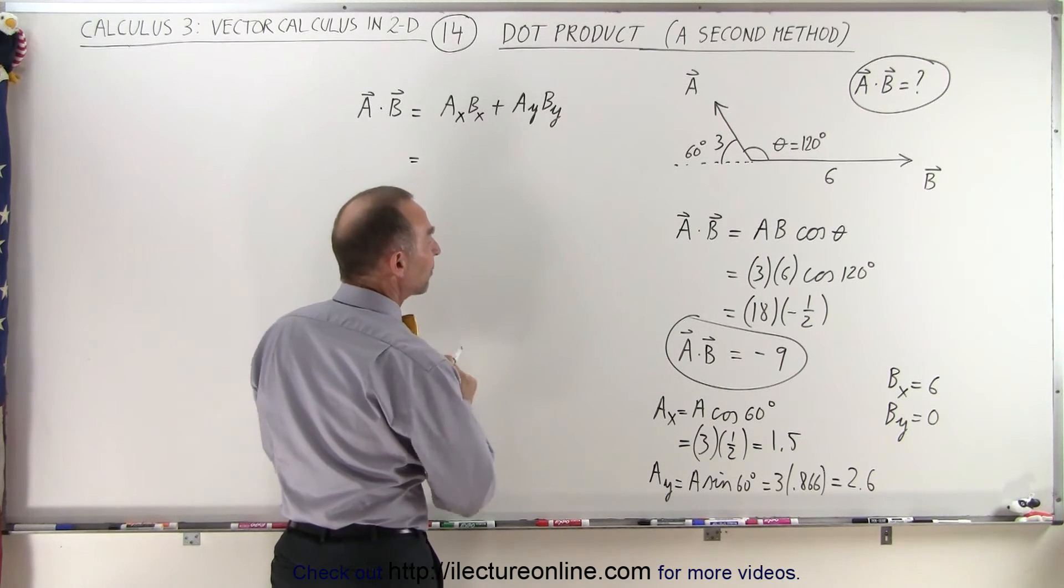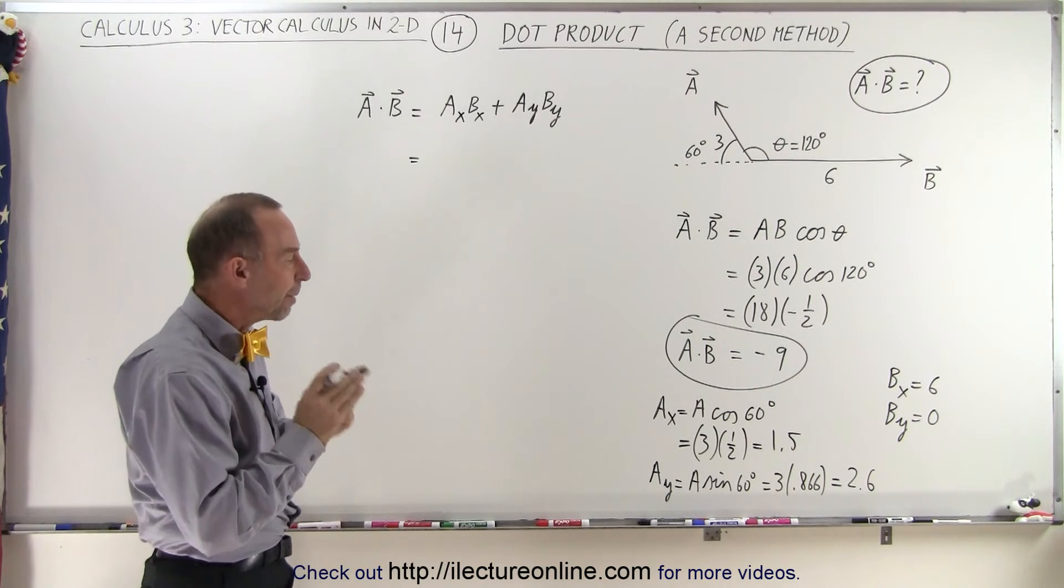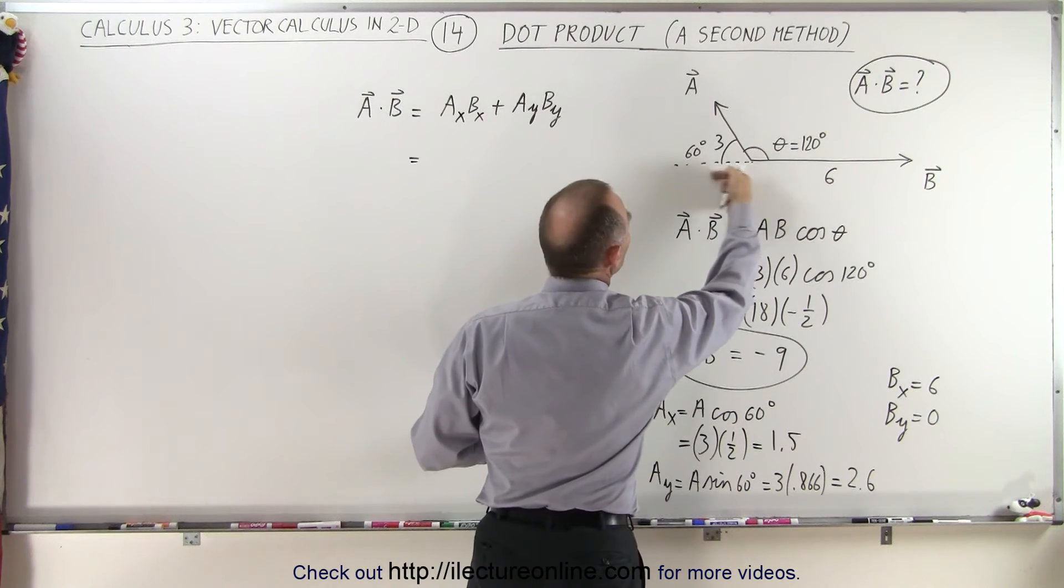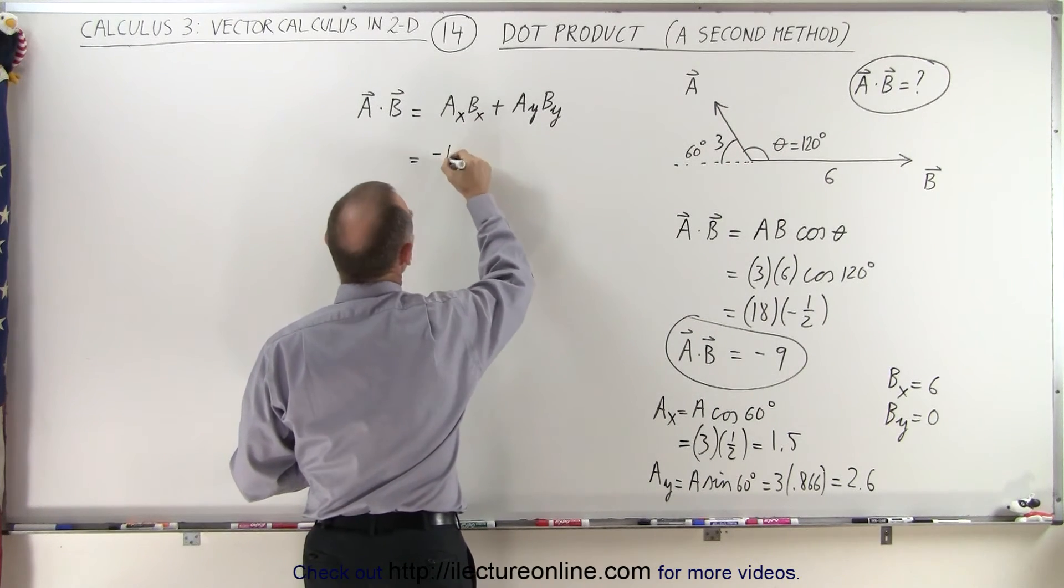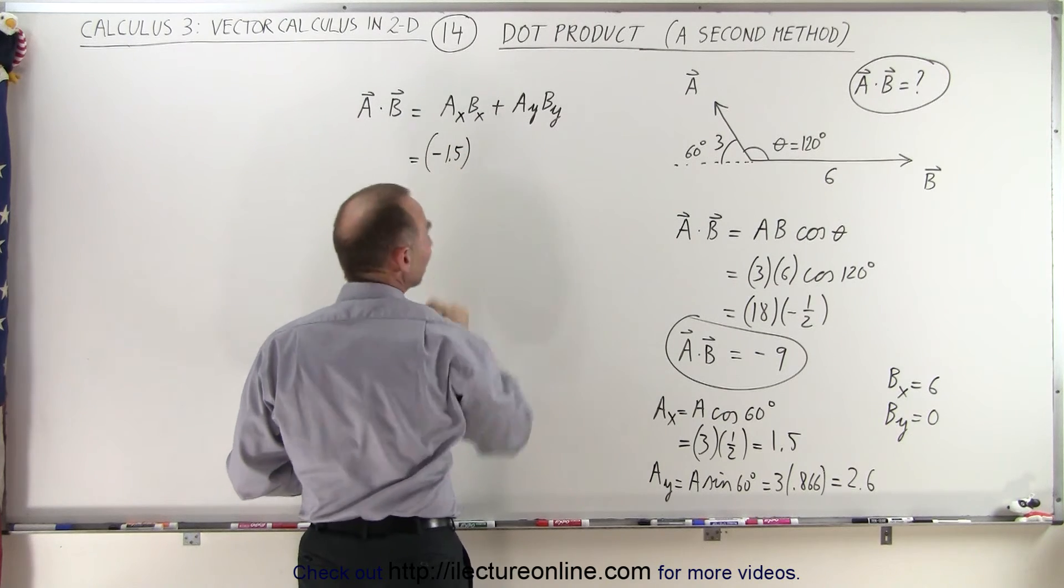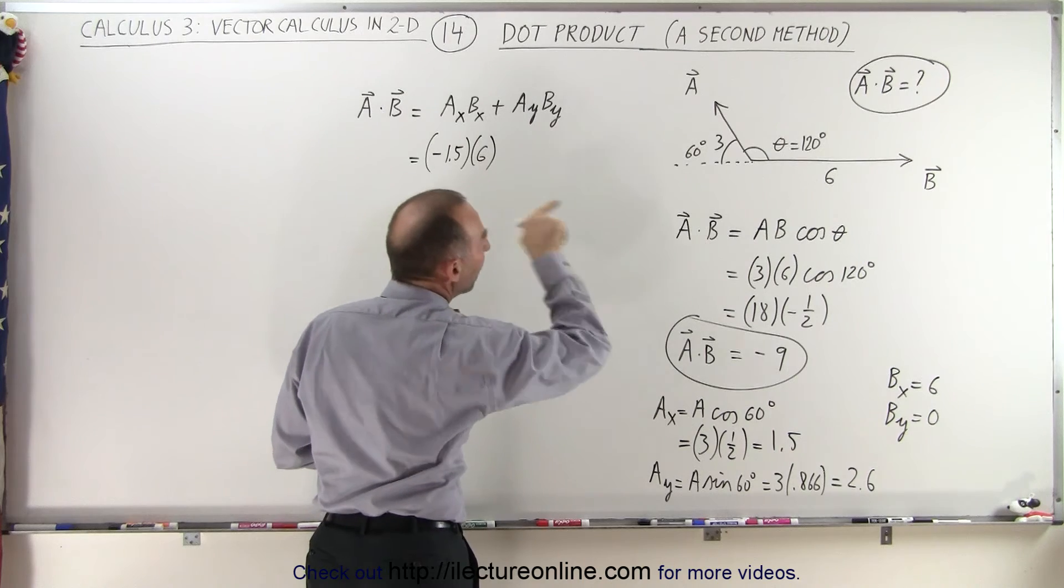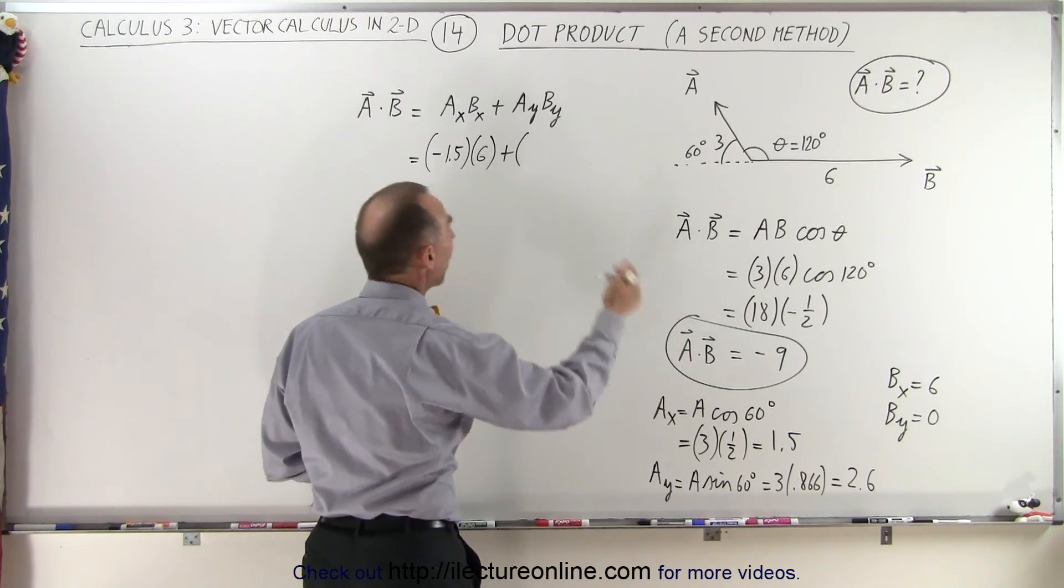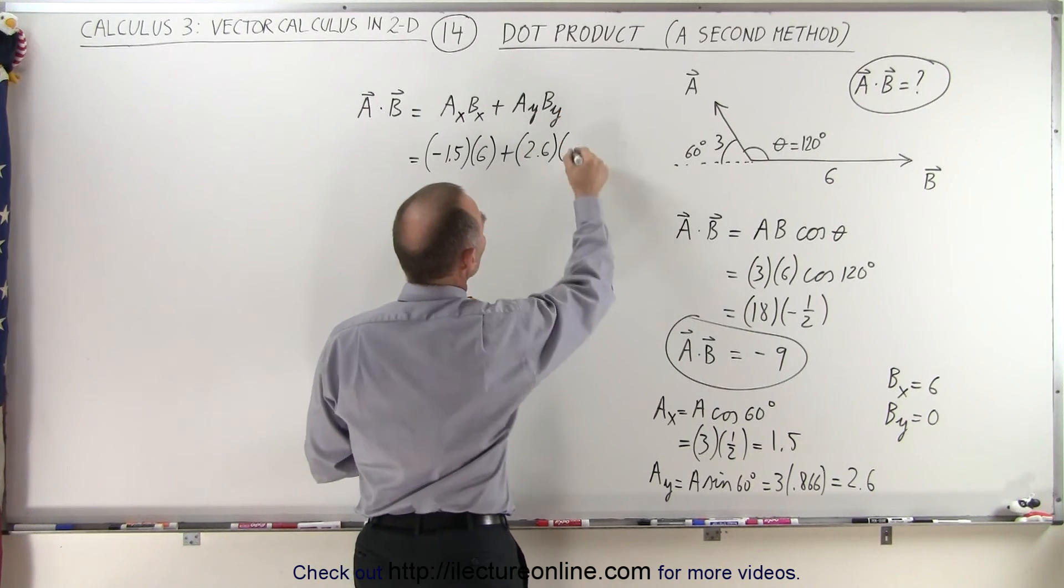A_x—now, here we have to be careful. Even though the magnitude of A_x is positive, we have to realize that it's pointing in the negative direction. So we're actually going to have to put a negative 1.5. B_x, that's going to be a positive 6 because it's pointing in the positive direction. Plus, A_y is going to be a positive 2.6, and B_y is going to be 0.